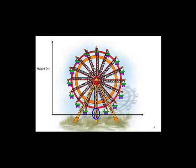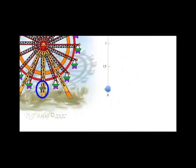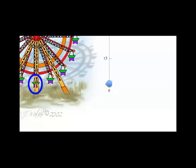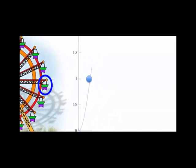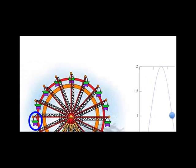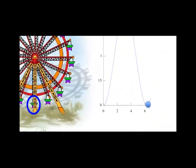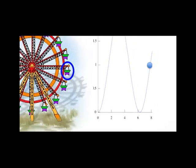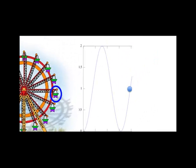Imagine sitting on a Ferris wheel. If you were to plot your height above the ground as a function of time, it might look something like the following. You start off closest to the ground at zero height. After a little bit of time has elapsed, you're halfway up the Ferris wheel. After more time has elapsed, you're all the way at the top. You continue this circular motion heading down the Ferris wheel until you arrive back at your starting position, and you can continue this motion around the Ferris wheel.